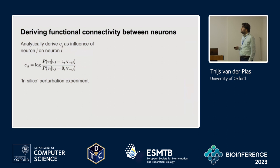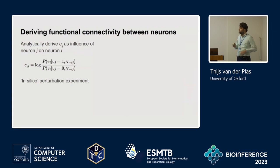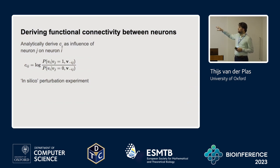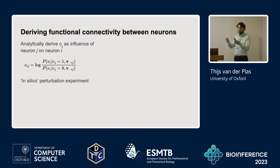Finally, using this model we can derive the functional connectivity between neurons. Given our probabilistic model P, we can ask: what is the probability that neuron I is active when neuron J is active, versus when neuron J is not active? We condition this on all other neurons in the system to isolate the connection between those two neurons, and we can analytically derive a number that gives us the functional connection between any two neurons.